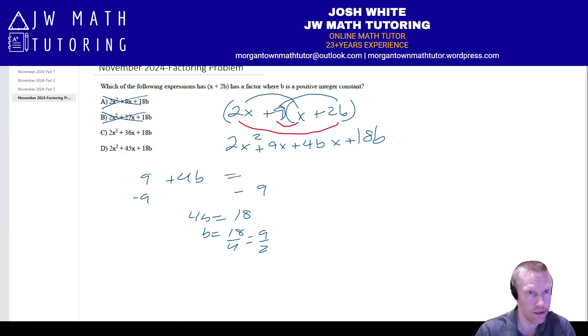So now let's check the third answer choice, 36. You're going to get 27. And 27 over 4, which is going to be 6 and 3 quarters, I believe, 6.75, that is not an integer.